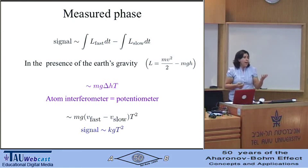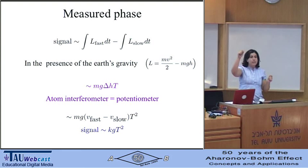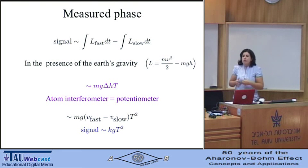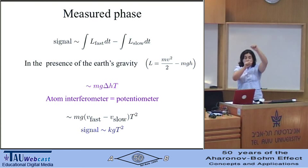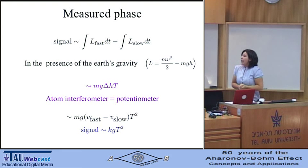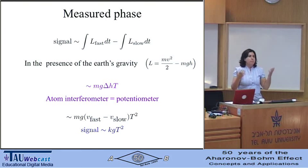The measured phase is just the difference in the actions between the fast and slow components of the wave function. In the presence of the gravitational field of the Earth, this is just the difference in the potential that the two wave packets reach. You can think of the atom interferometer as a fancy potentiometer.